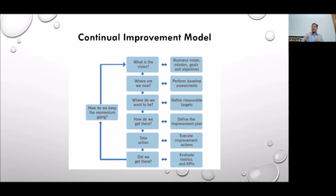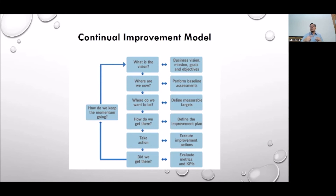Next, determine how to get there by designing four or five important actions — for example, upgrading skills of service management staff, improving tools, and improving communication flow. Once you take those actions, at the end of the month you check whether you have reached the target level in the next customer satisfaction survey. If reached, the task is complete; if not, you repeat the cycle. This may take two or three iterations depending on the service environment.